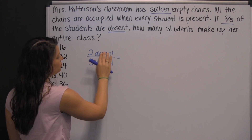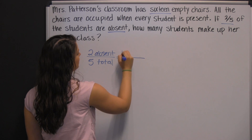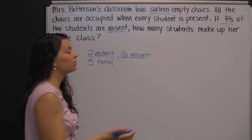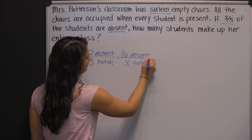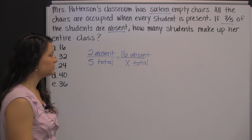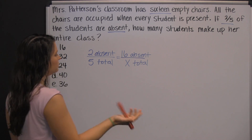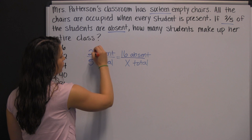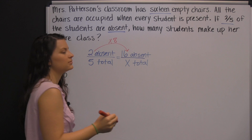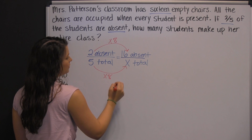Make sure you are consistent when you set up proportions. If your first ratio is two absent to five total, then your second ratio should be sixteen absent to — and here's what we don't know — how many total. There's more than one way to solve a proportion. Sometimes you'll get a proportion that lends itself to just figuring out a pattern. For instance, what do you do to two to get sixteen?